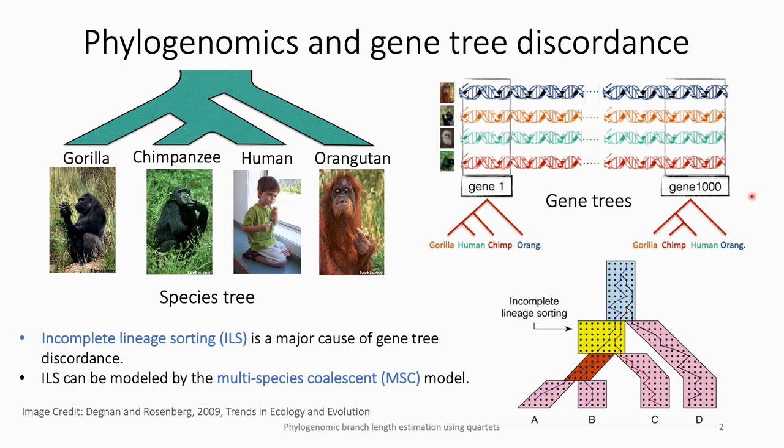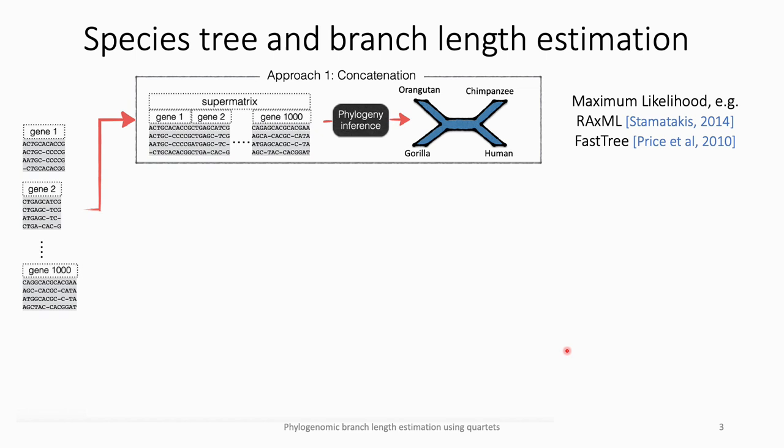This gene tree discordance can have several causes. A major cause is incomplete lineage sorting or ILS, which can be mathematically modeled by the multi-species coalescent or MSC. MSC models a random process describing the way alleles coalesce in populations of individuals. When two lineages don't coalesce at their common ancestor, as shown in the yellow box here, it results in ILS that creates the opportunity for gene tree discordance.